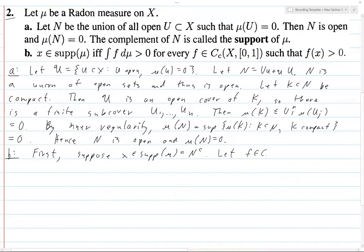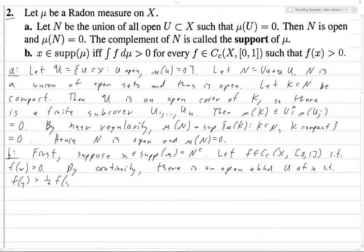So let F be in compactly supported functions on X, taking values in 0 and 1. And let it be such that F of X is positive. By continuity, there is an open neighborhood U of X, such that F of Y is identically greater than 1 half of F of X for all Y and U.